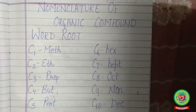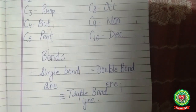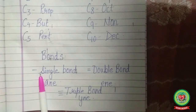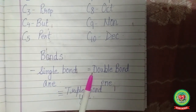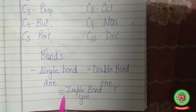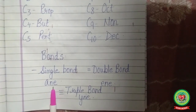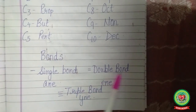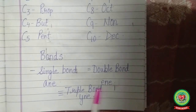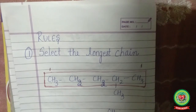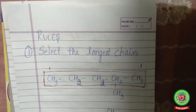After the word root, the next thing that should be clear to you is the bond — how one carbon is associated with another carbon, whether it is single, double, or triple. If a single bond is present between two carbon atoms, we use 'ane'; if it is a double bond, we use 'ene'; and if it is a triple bond, we use 'yne'.